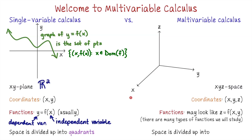Here we have x, y, z space, which we'll denote by R3. Anytime I say R3, I'm talking about this x, y, z space. When I look at these three axes, I imagine that I'm looking at a place in a room where I've got two walls and a floor. This axis I would label x, this one y, and this one z.